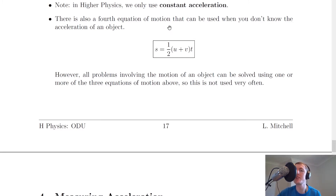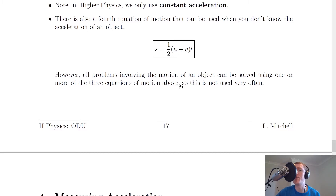There's a fourth equation of motion that can be used when you don't know the acceleration of an object. It's here in the box: s = ½(u + v)t. You'll notice there's no acceleration there. All of these symbols have the same meanings as the other three equations of motion — displacement s, initial velocity u, final velocity v, and time t.